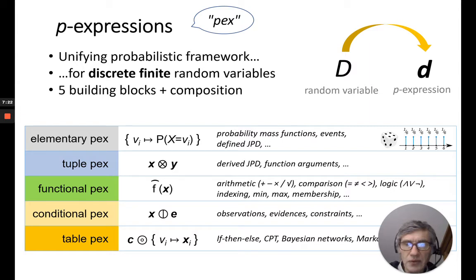So, it's useful for derived joint probability distribution and also for function arguments, as I will show now. We have functional PEX, which is basically to model a function on random variables. So, it's useful to do arithmetic, comparison, logical operation, but actually any other function, like indexing, min, max, membership, and many others, can be used. So, a small remark here. We speak about pure functions, so there is no side effect.